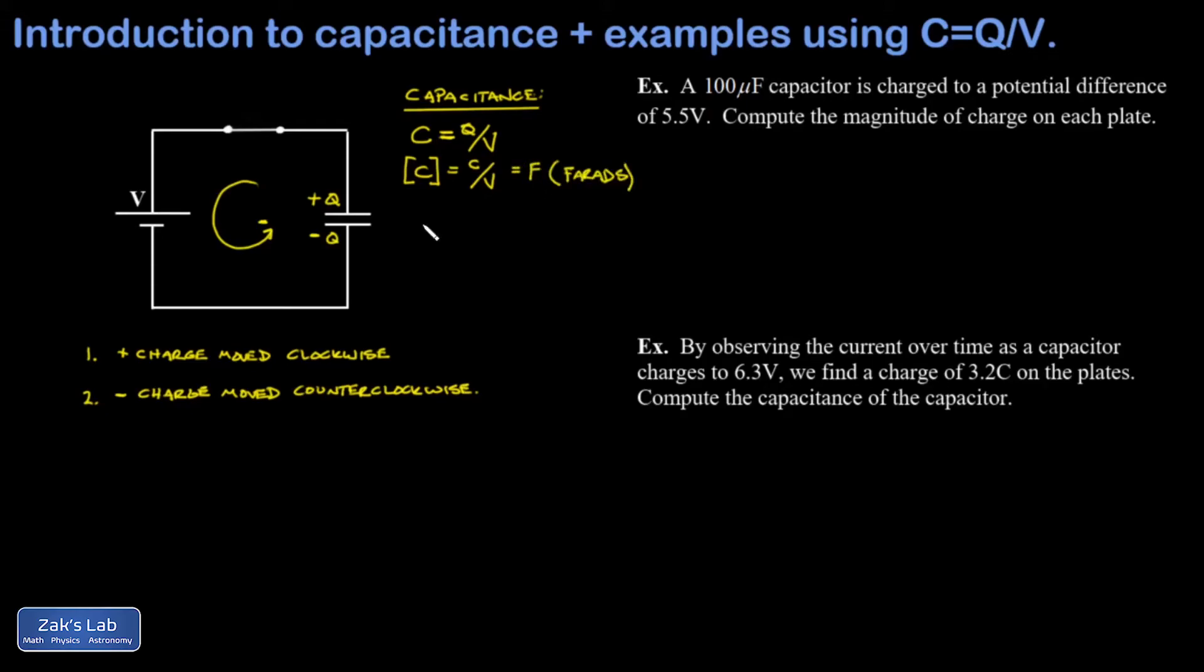And maybe to aid your intuition here, this definition of capacitance means that if a capacitor was twice as big, it would store twice as much charge for every volt of potential difference.